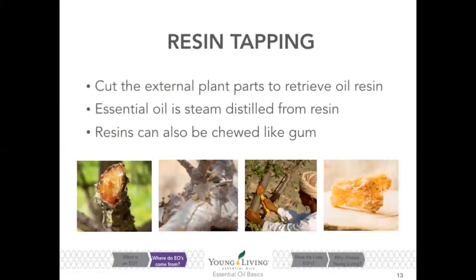Resin tapping is used to extract oils such as frankincense, myrrh, and copaiba. This is accomplished by scraping the external plant source, causing distress to the tree. Over time the tree produces a sap-like substance called a resin, which is collected and taken to be steam distilled. If you've tried the Sleek gum, it has frankincense resin in it, which is great for the teeth.